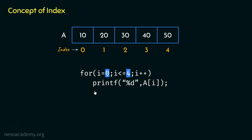Inside the loop, we have printf, the printing function of C. We are trying to print the integer or decimal value within the cell, and the cell is defined as A[i], where i is the variable responsible for the indices. With the help of this, we will be able to print all the elements within this array. So this is how, using the concept of index, we can access the elements of an array.